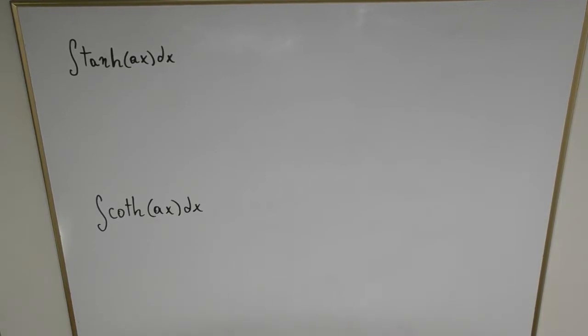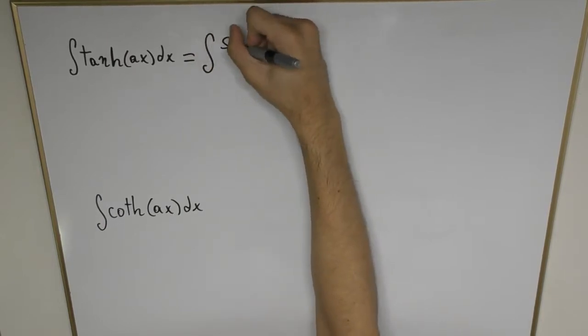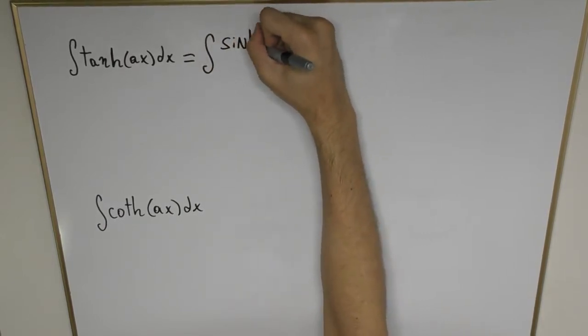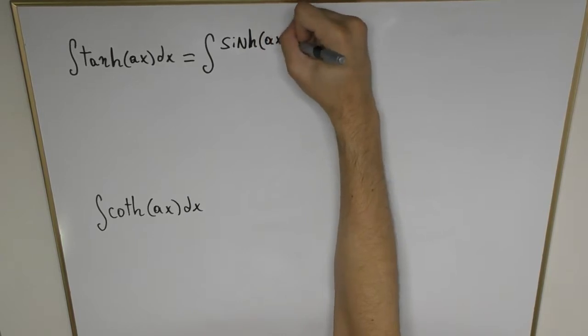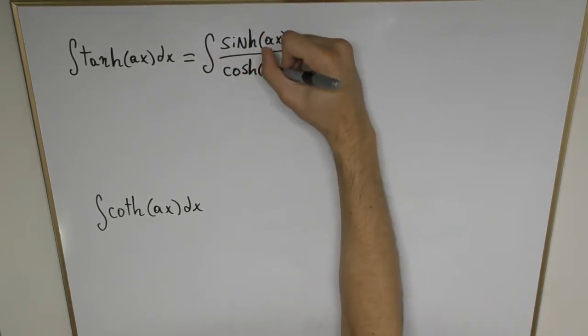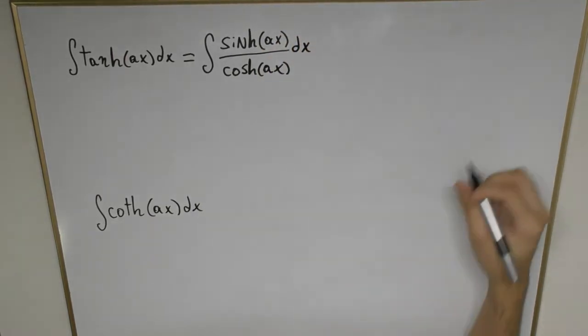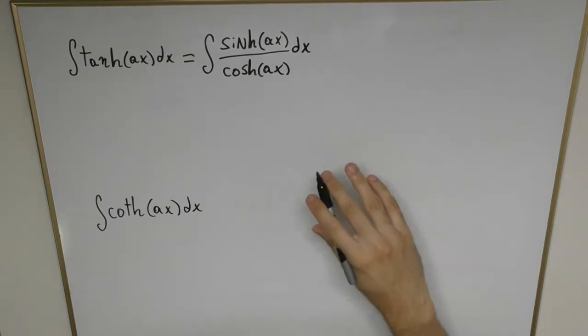In order to do this we're going to use the simple fact that this function decomposes into the ratio of sinh(ax) and cosh(ax) dx. Now you will see this rational function here, you'll notice that if we were to differentiate any of these we get the other.